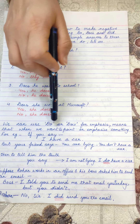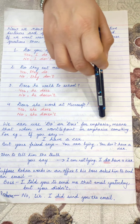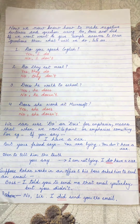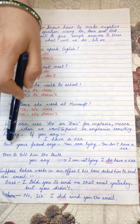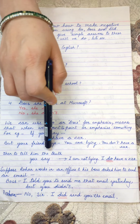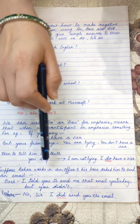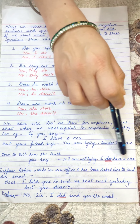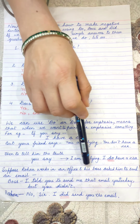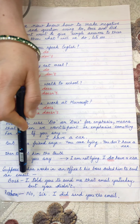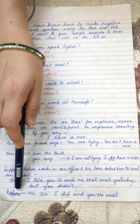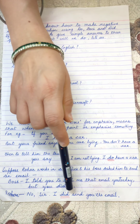We can also use do or does for emphasizing something — when we want to strongly affirm something. For example, if you say 'I have a car' but your friend says you are lying and don't have a car, then to tell him the truth you say: 'I am not lying. I do have a car.' Similarly, suppose Rohan's boss says 'I told you to send me that email yesterday but you didn't.' Rohan, having sent it, replies: 'No sir, I did send you the email.'